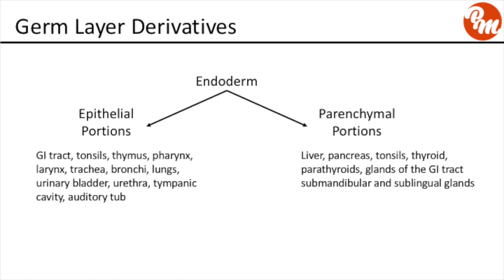The parenchymal portions include the liver, the pancreas, the tonsils, the thyroid, the parathyroid, the glands of the GI tract, the submandibular and sublingual glands. Also note that the anal canal above the pectinate line is derived from endoderm, while the portion of the anal canal below the pectinate line came from surface ectoderm.